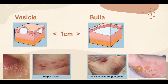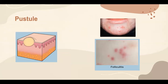A vesicle is a raised, palpable, circumscribed, fluid-filled lesion that is usually less than one centimeter in diameter; the fluid could be clear or hemorrhagic. Examples of vesicles are seen in herpes simplex infection. When such a lesion is raised, palpable, circumscribed, and fluid-filled but more than one centimeter in diameter, we call it a bulla. Examples of bullae are seen in fixed drug eruption or bullous pemphigoid. A pustule is a raised, palpable, circumscribed lesion filled with pus, usually less than one centimeter in diameter. Examples of pustules are seen in acne vulgaris and folliculitis.